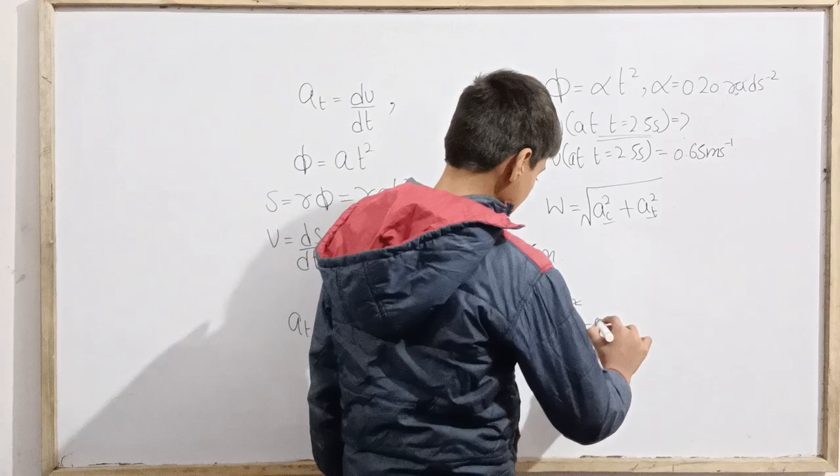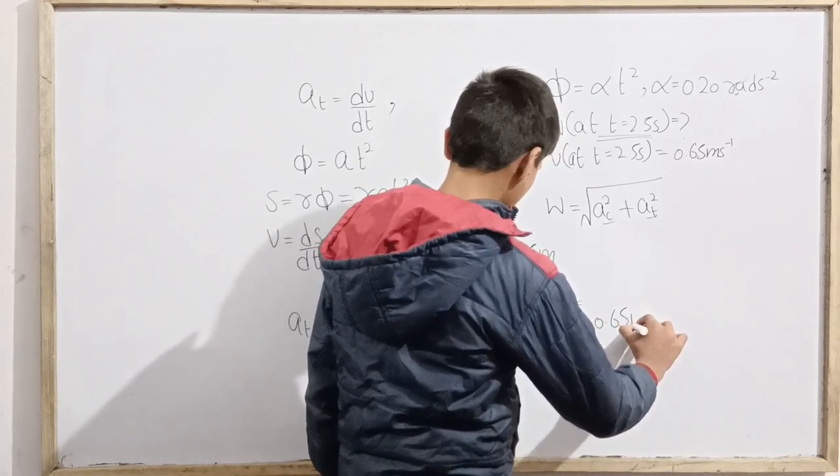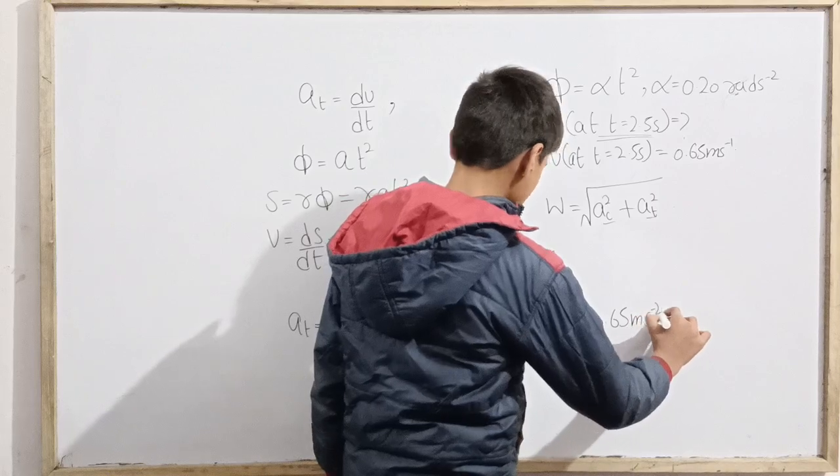So this just cancels out, and this is 0.65. What? 0.65 meter per second squared.